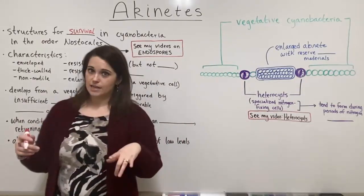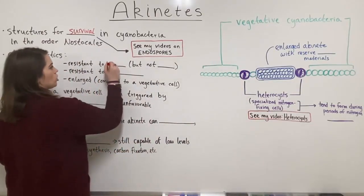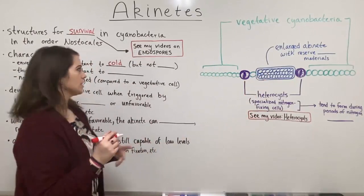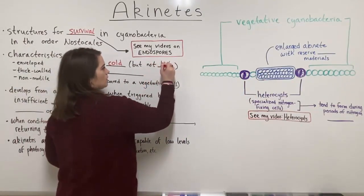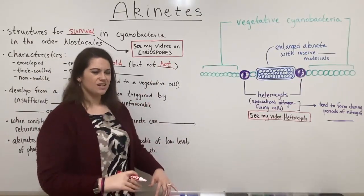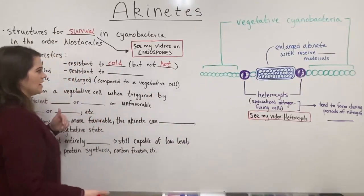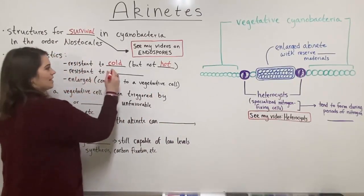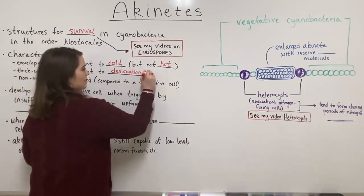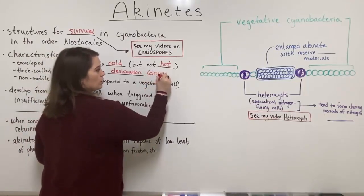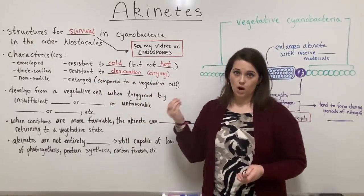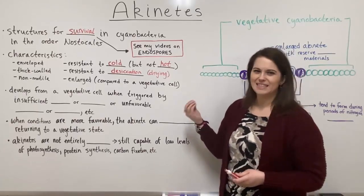Akinetes are also quite resistant to certain conditions. They are resistant to cold — so they can survive and persist in cold conditions — but interestingly, not to heat. They're helpful when the temperature is becoming unfavorably cool, but not very helpful if the temperature is increasing and getting hot. Akinetes are also resistant to desiccation, which is a fancy word for drying, so they can survive when things get very dry and there's not much water available.